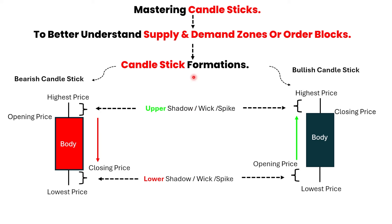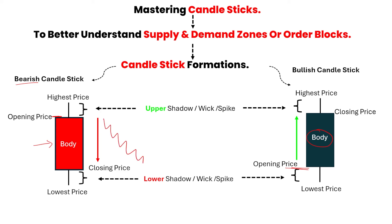The first thing you need to do is understand how a candlestick is formed. In the market, we have a bearish candlestick and a bullish candlestick. They both have the same high price area and then we have a wick — this is where the price was trending and then got rejected. On the bearish candlestick, the opening price is at the top. On the bullish candlestick, the opening price is below. And then we have a body — this is where the market was trending or ranging. The bearish candlestick moves to the downside; a bullish candlestick moves to the upside.